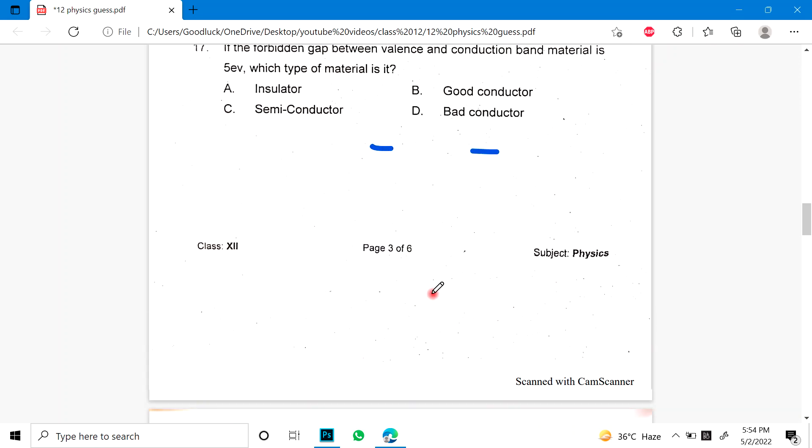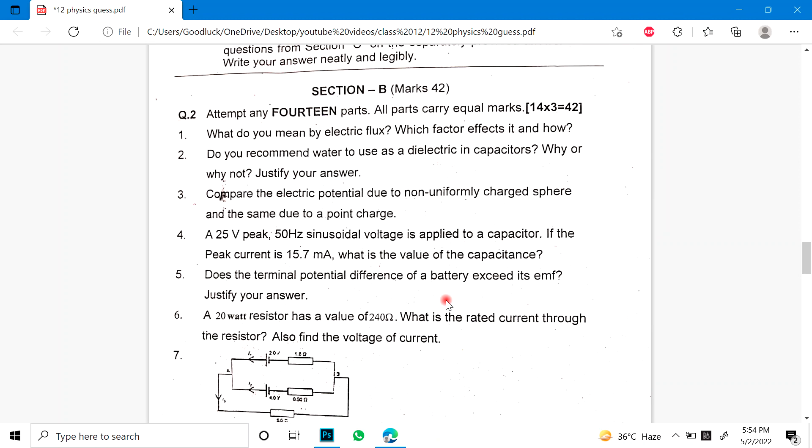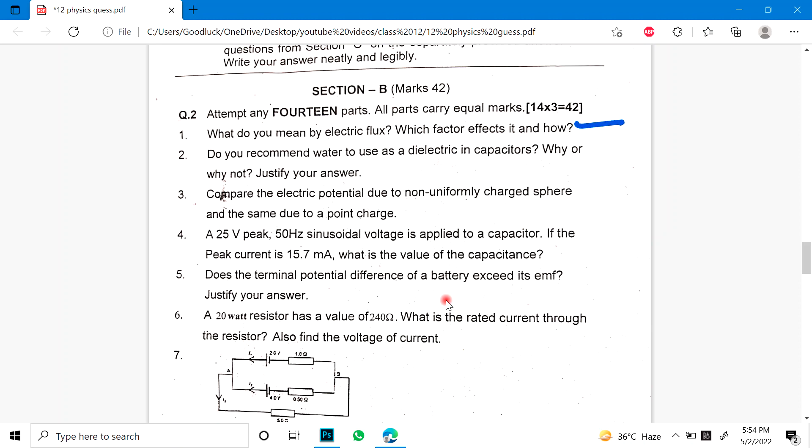So this was the objective. Subjective Section B, 14 marks - you have to attempt 3 marks. 1: What do you mean by electric flux? What factors affect it and how? 2: Do you recommend water to use as dielectric in capacitors? Why or why not, justify your answer. 3: Compare the electric potential due to non-uniformly charged sphere and the same due to point charge.